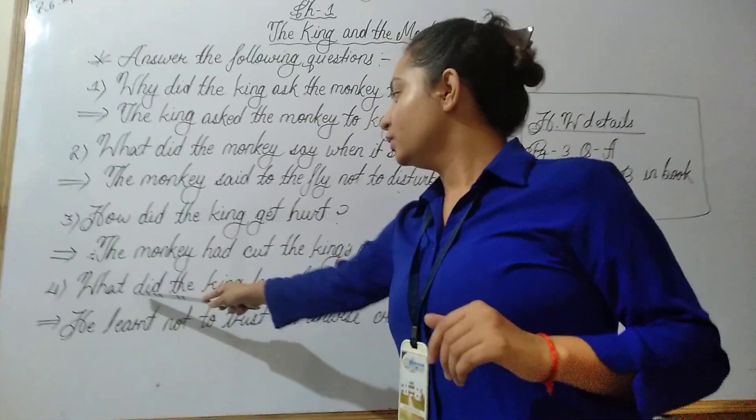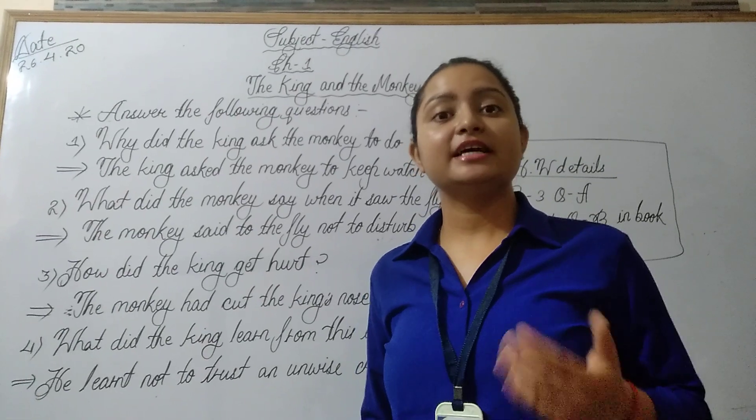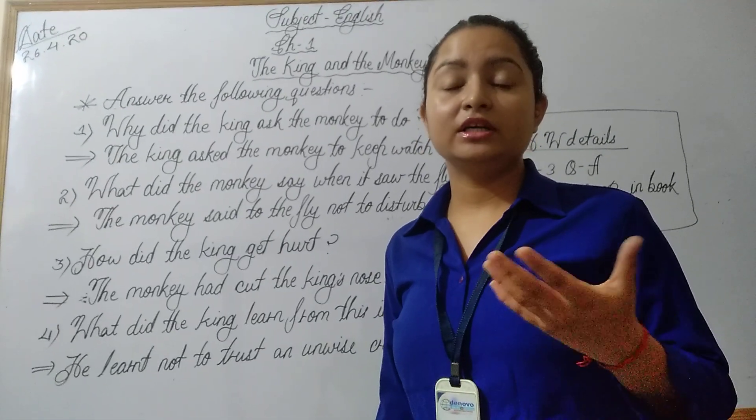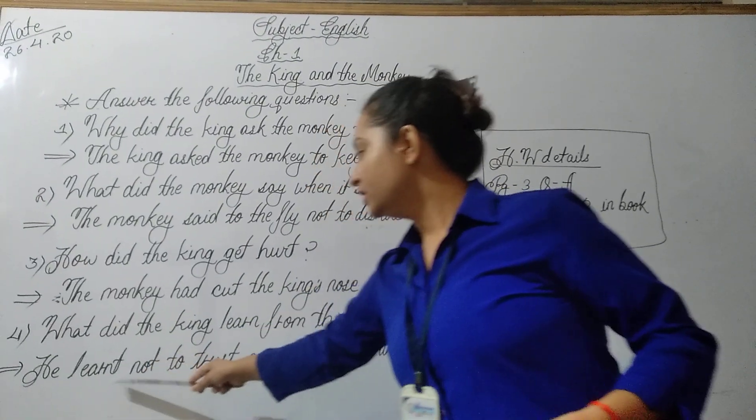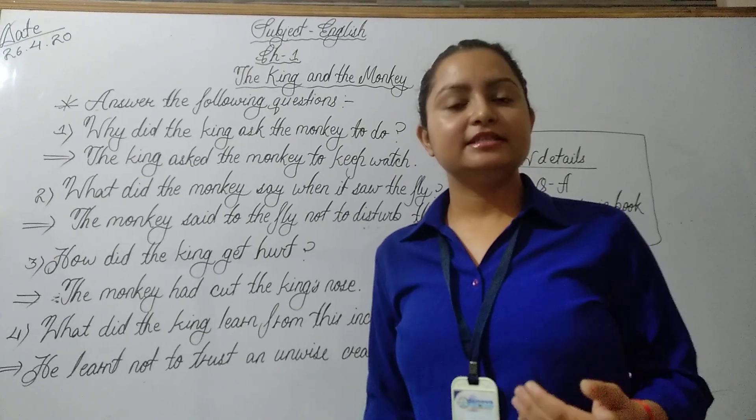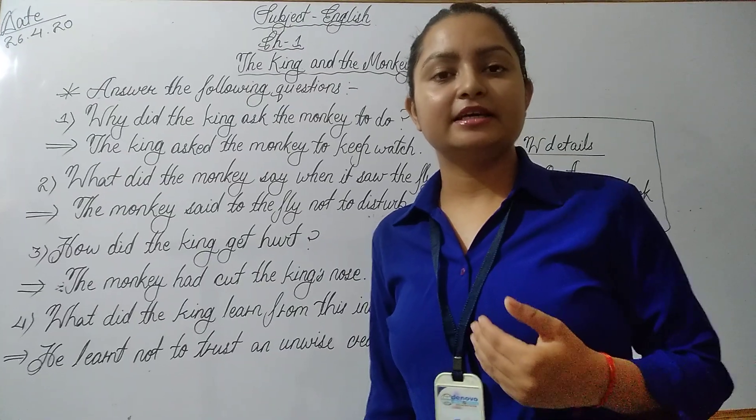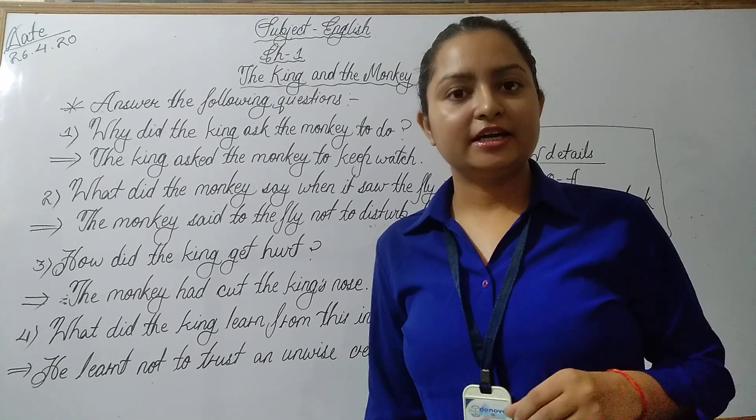Question number 4 is, what did the king learn from this incident? Is khatna ke baad raja ni kya si tha. What did he learn from this incident? Answer is, he learned not to trust an unwise creature. Raja ne ish incident se ye sikha, ish ghanai se ye sikha ki kabhi bhi moor pranyo ke upar bharosa nahi karna chahiye.